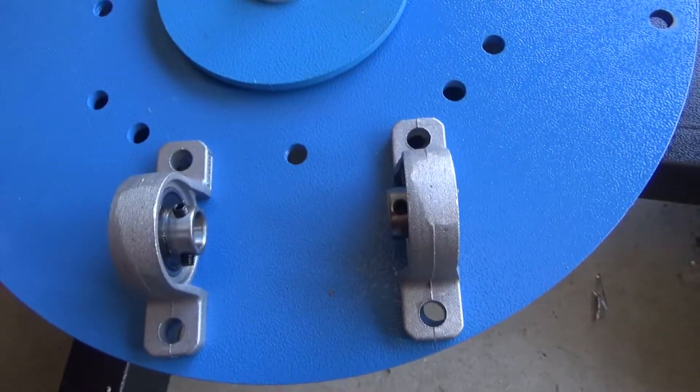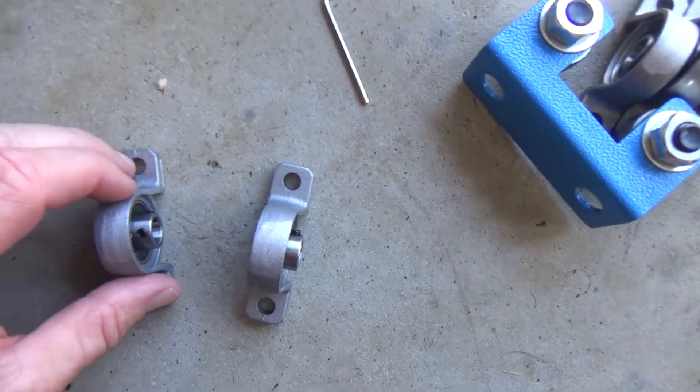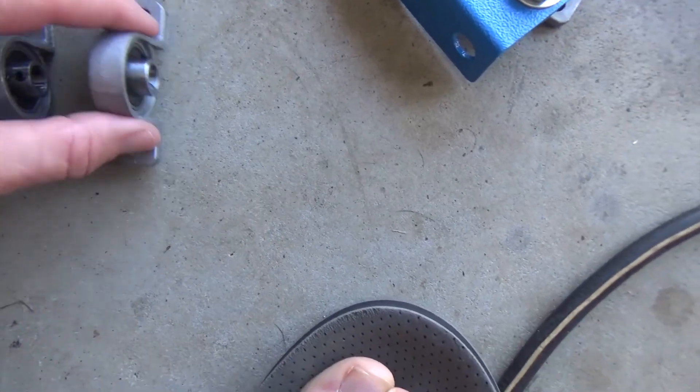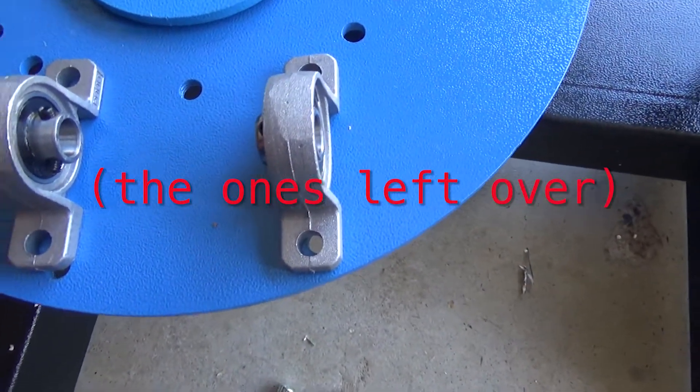As they screw onto this plate here, first thing to do is separate them. Find your four that are all the one way, and find the four the other way.